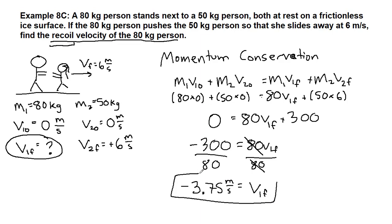That negative sign means that they're going to be moving at 3.75 meters per second of speed in the opposite direction from the 50 kilogram person.